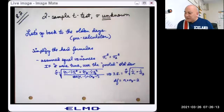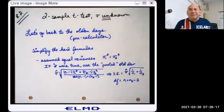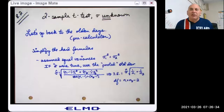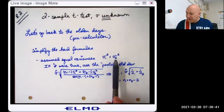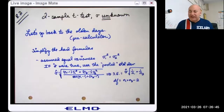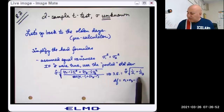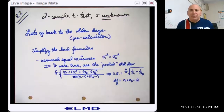First, let's go back to the olden days. Before calculators, equations and formulas could be really tough to handle. One thing that simplified difficult formulas was assuming the variance of the first population was equal to the variance of the second population. If that were true, we could do what was called the pooled variance, and this formula simplifies to a nice t-distribution with n1 plus n2 minus 2 degrees of freedom.